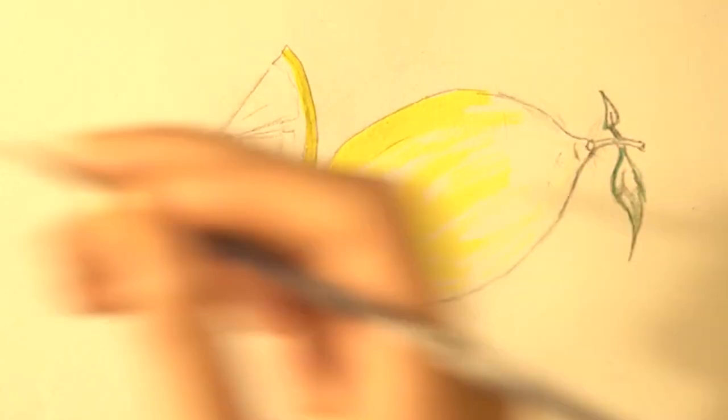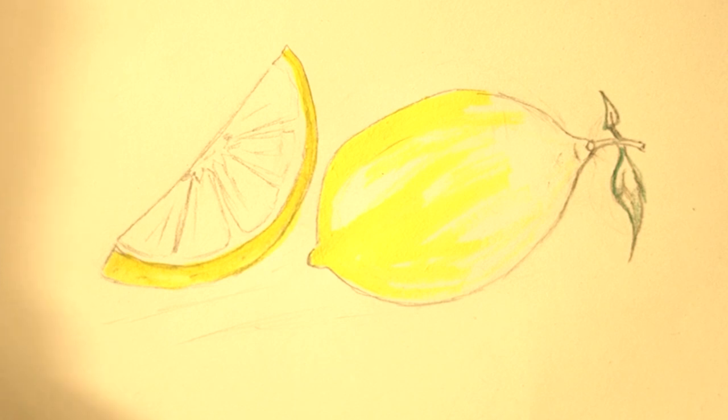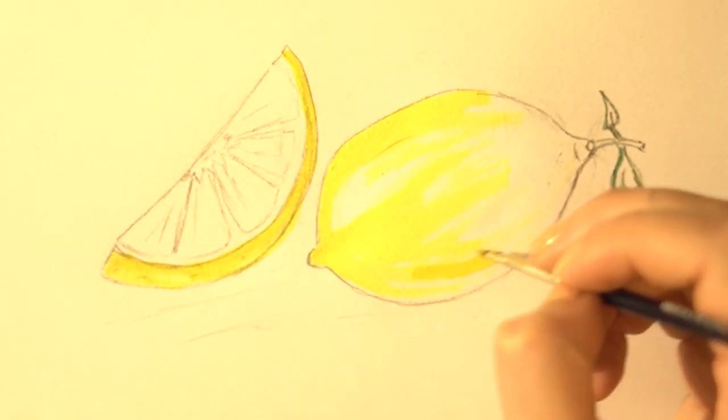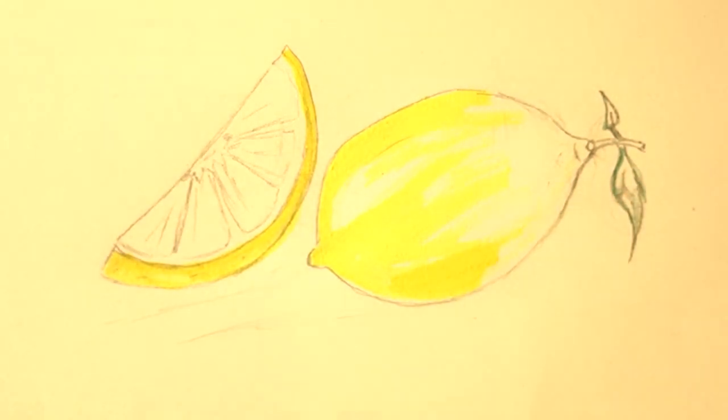As you can see, I'm leaving a little white space on the lemon to mark where the light will hit it. We can make it darker later if we need to, but it's harder to make it lighter.